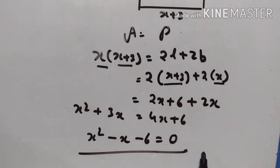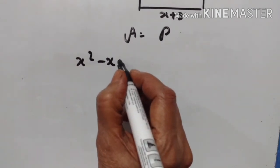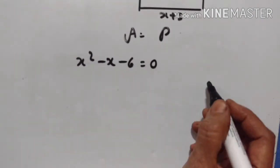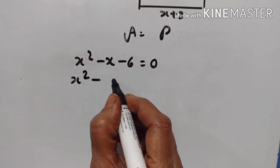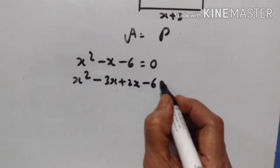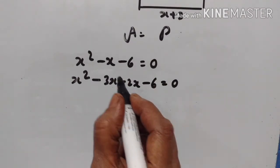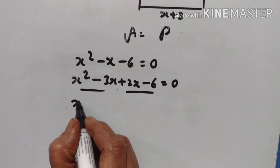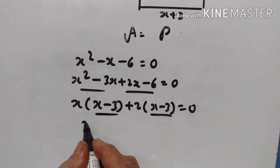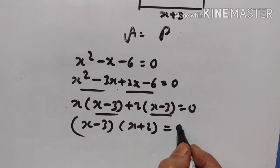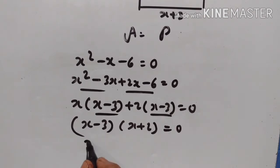Now we have to solve the equation obtained and find the dimensions of the veranda. x squared minus x minus 6 equals 0. The product is minus 6 and the sum is minus 1, so we factor as x squared minus 3x plus 2x minus 6 equals 0. This gives x(x minus 3) plus 2(x minus 3) equals 0, so (x minus 3)(x plus 2) equals 0. Therefore x equals 3 or x equals minus 2.